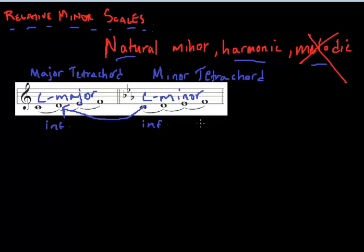To find the relative minor of any major key, you must take the tonic of the major scale and move backwards three semitones. So, for example, if we use C major, we want to find its relative minor. We move backwards three semitones.